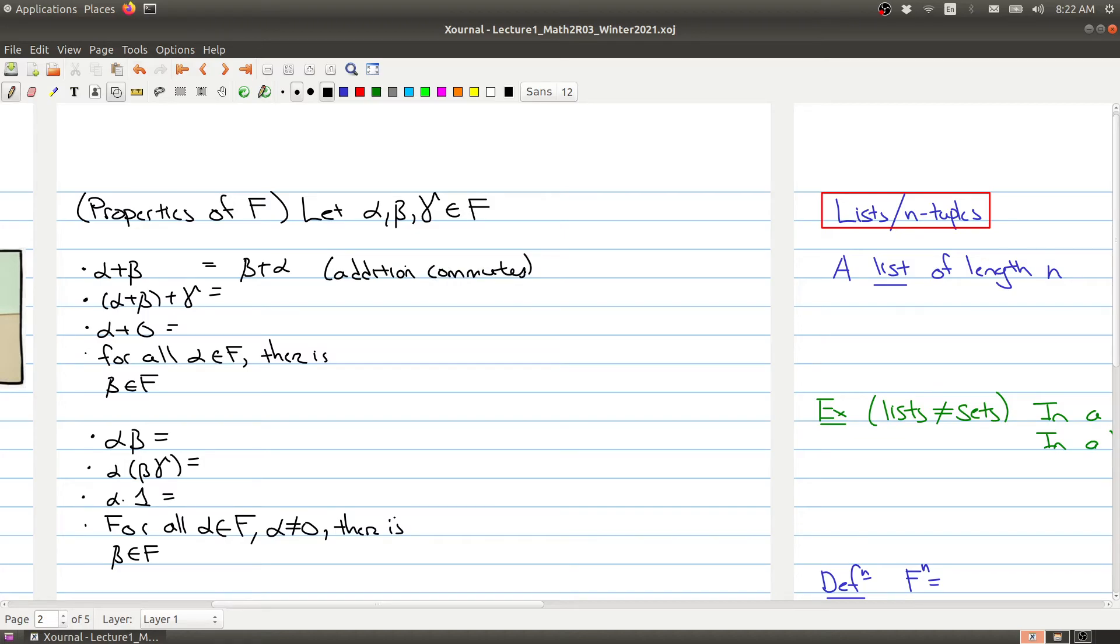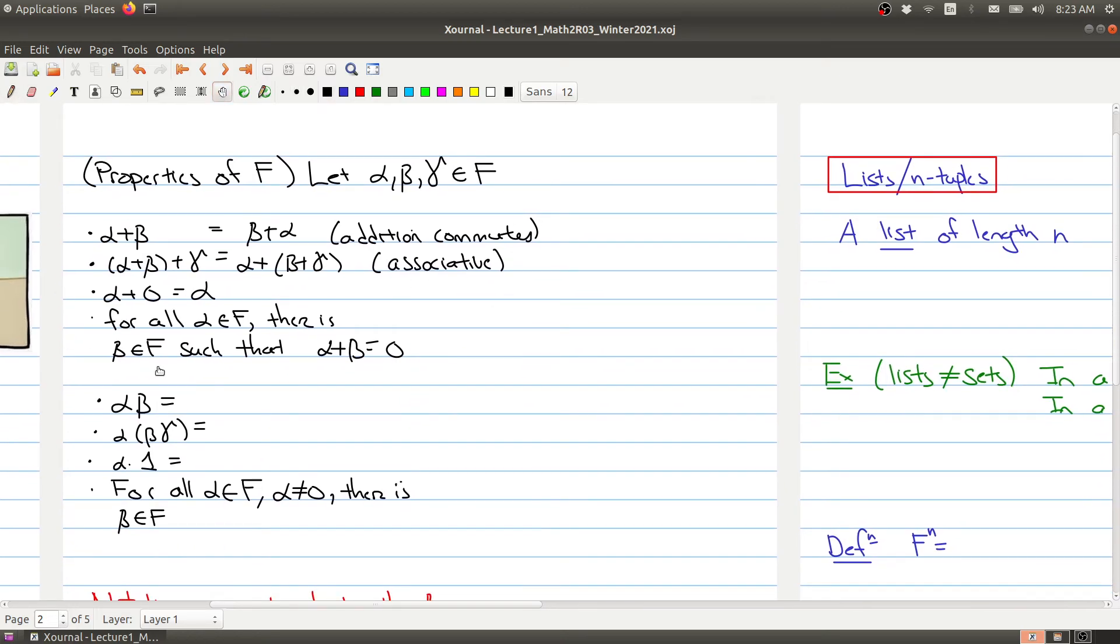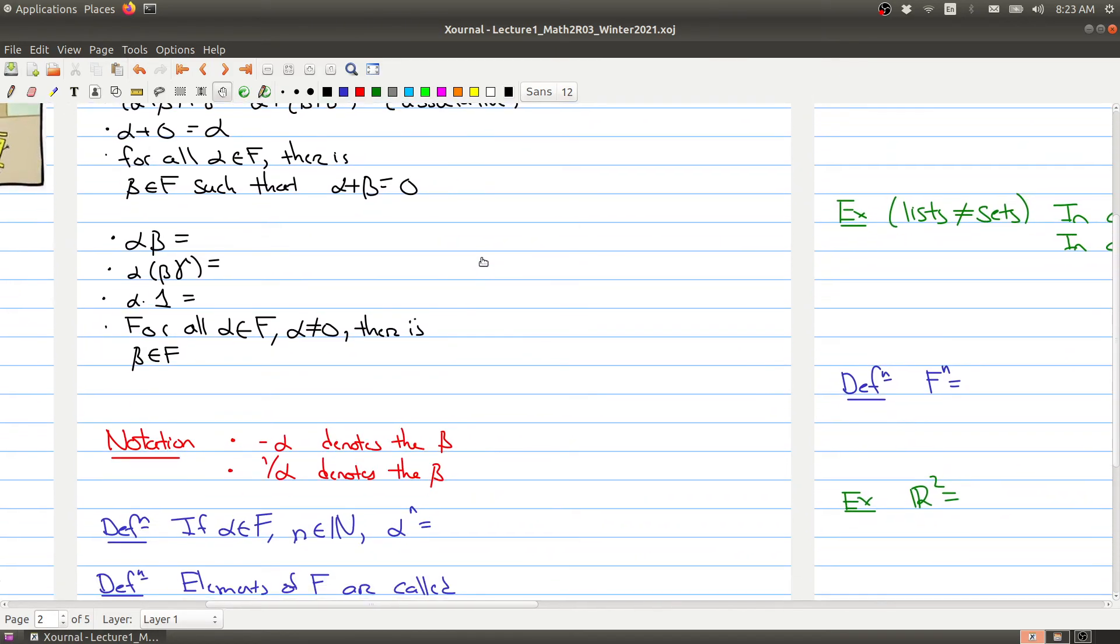One of the other properties is that addition is associative. So when you have three things and you add them together, it doesn't matter in which order you add them, so we have the associative property. We have the property that there's an element zero inside of F that has the property that alpha plus zero is alpha. And also for all alpha in our set F, there's a beta such that alpha plus beta equals zero. So there's always, given any element alpha, we can add something to it to get to zero. So these kind of tell us about the addition properties inside of F.